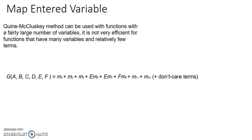The entered variable map makes use of the K-map technique. So far in the problems we have solved, we have entered values into the map like zero, one, and don't cares. But now in this method we are going to enter even the variables inside the map. That is what is called the entered variable map.